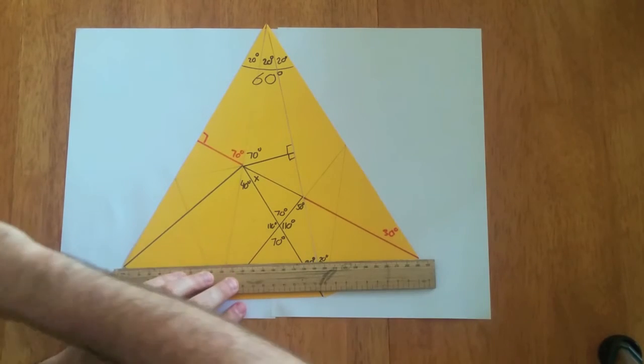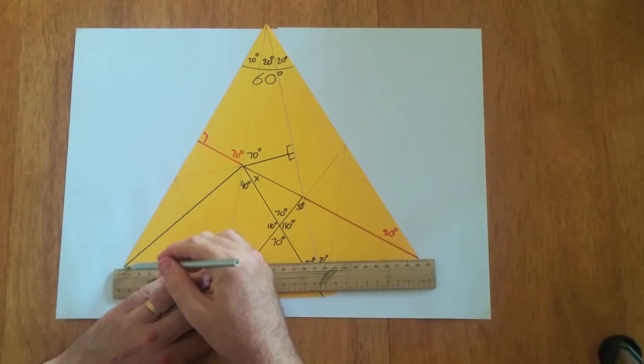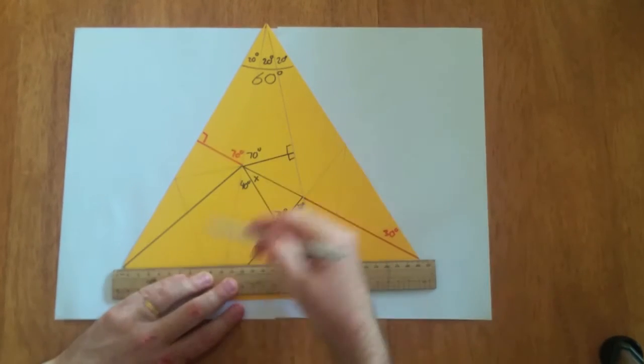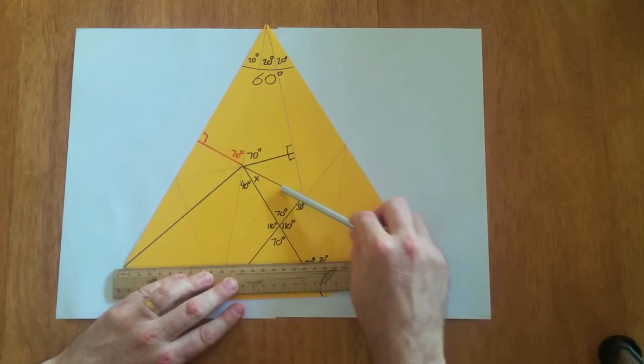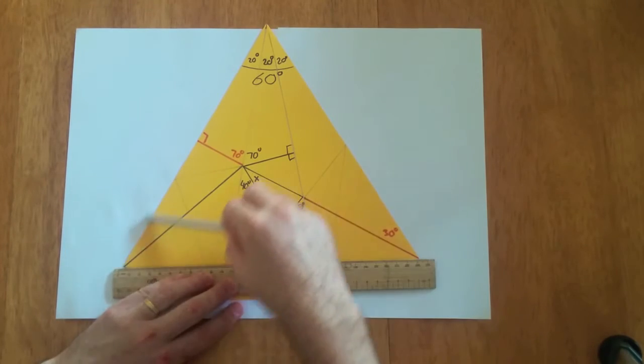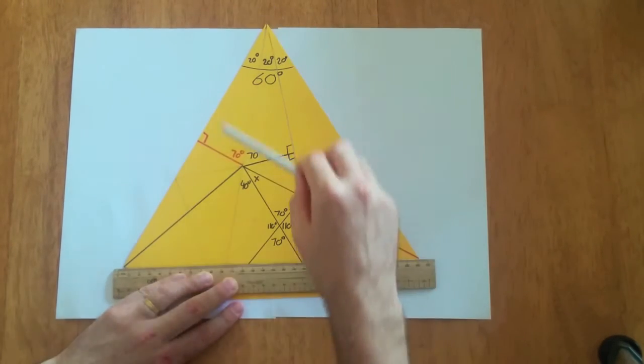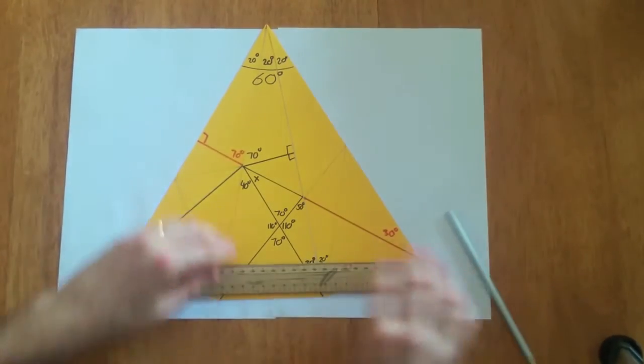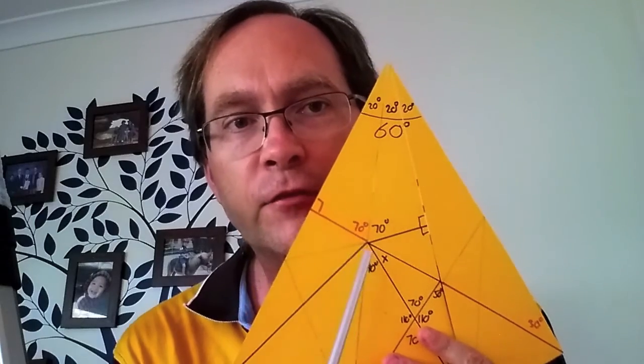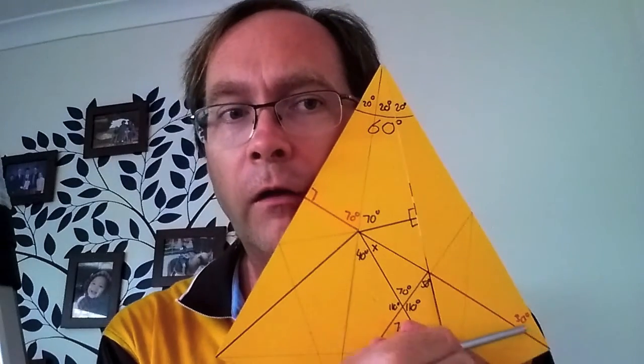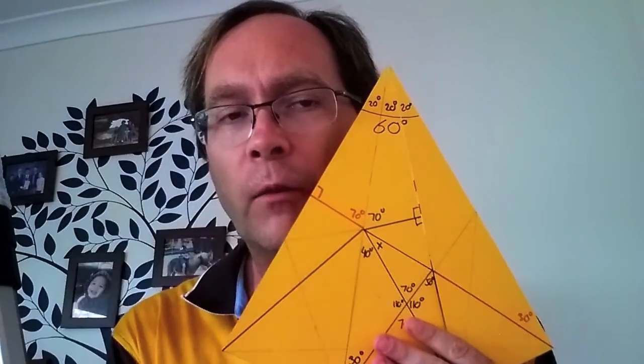Not only have you got an equilateral triangle here, but this 30 degrees chops the triangle into two pieces. This is also the perpendicular bisector of this edge. So this is the perpendicular bisector of this edge. But this is also the perpendicular bisector of this edge. And so what that means is, this red line and this red line are exactly the same line. So this whole thing joins up. It really is one straight line.